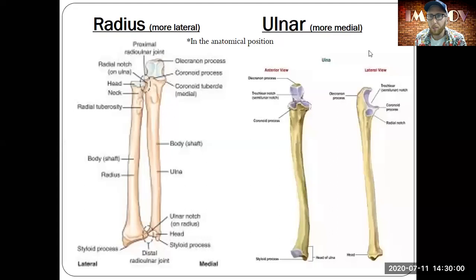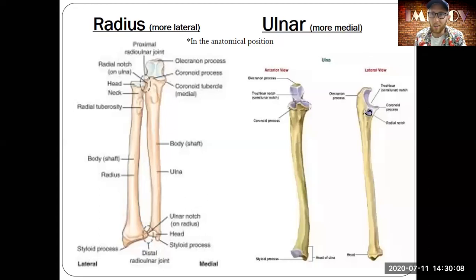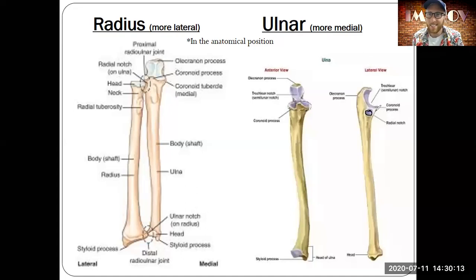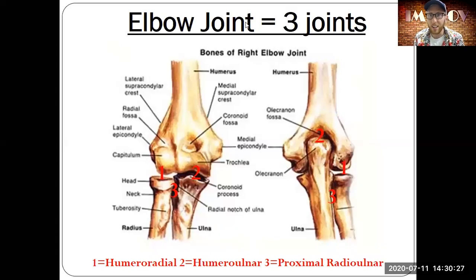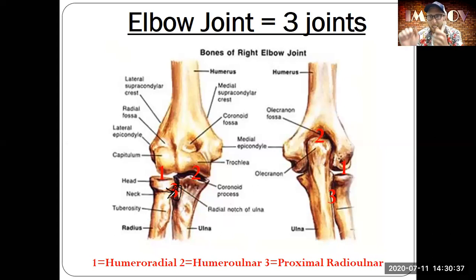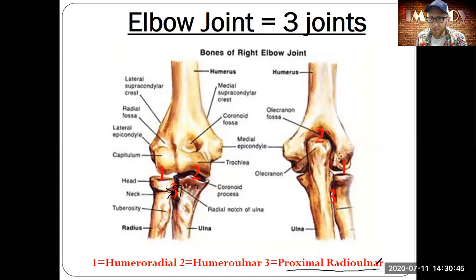Something called the radial notch is on the ulna. Anytime you have the name of another bone on a different bone, it's typically where that other bone attaches. The radial notch on the ulna is where the radius is articulating — a nice smooth area — and that's what we call the proximal radial ulnar articulation or joint.